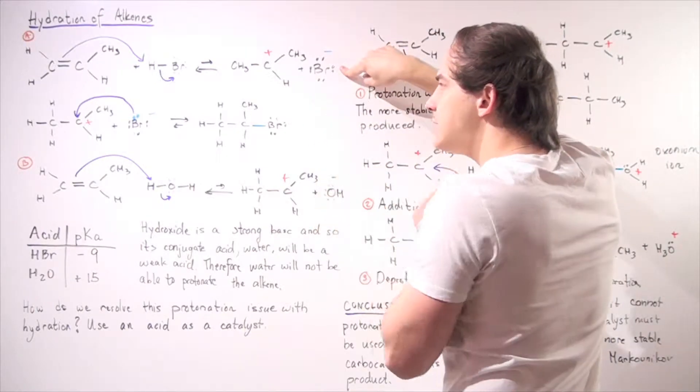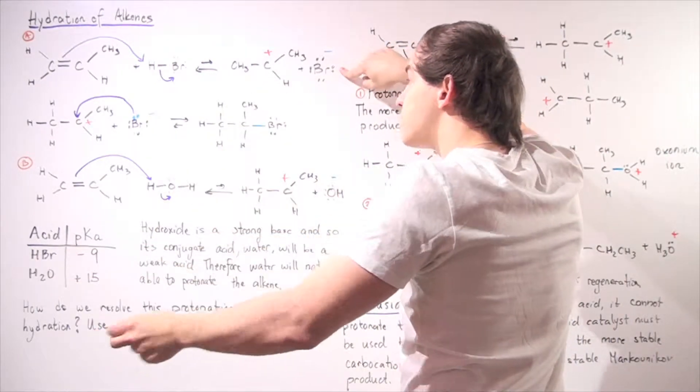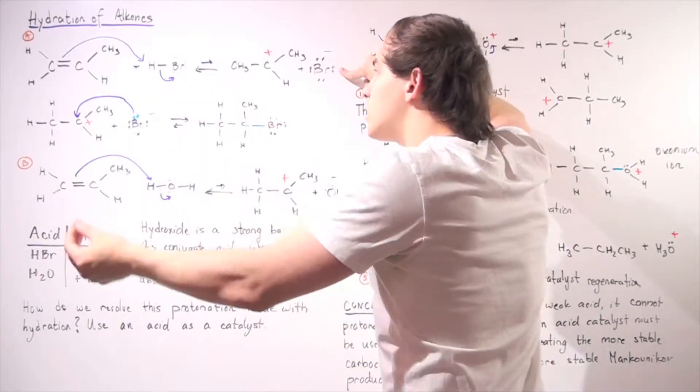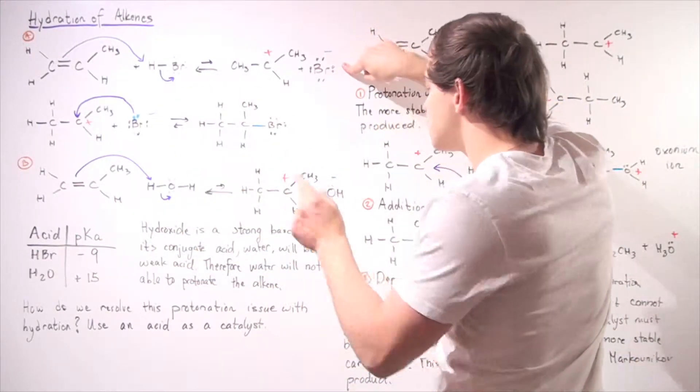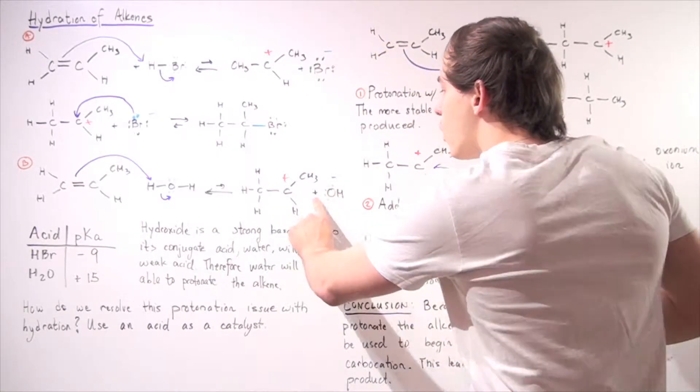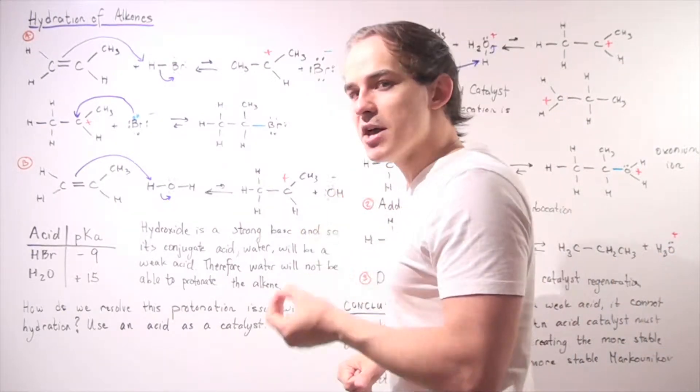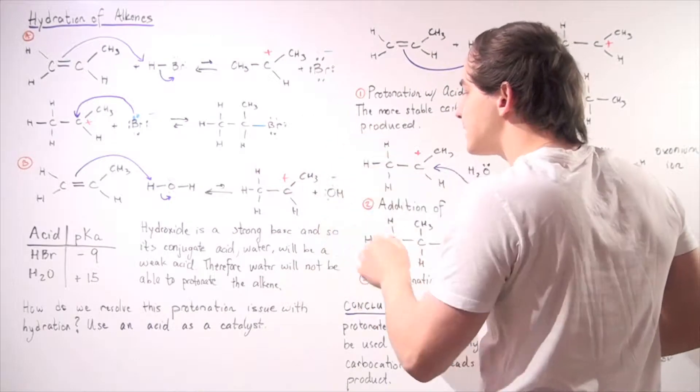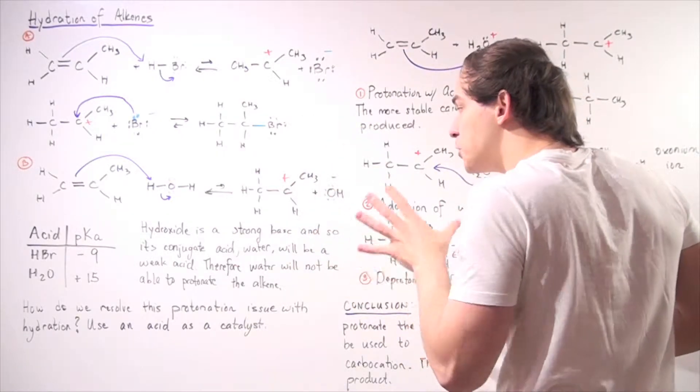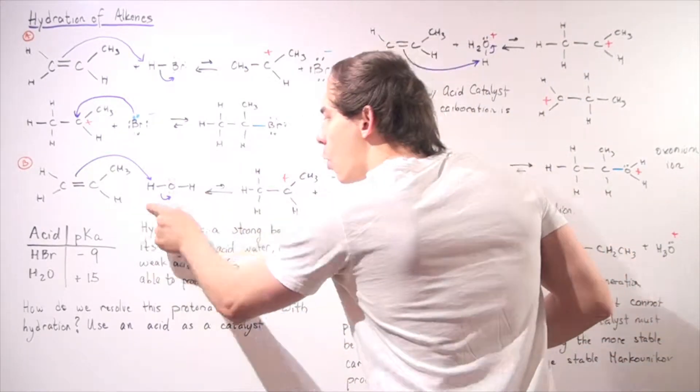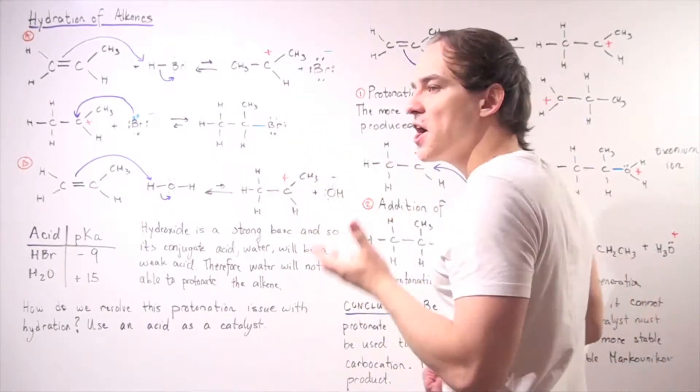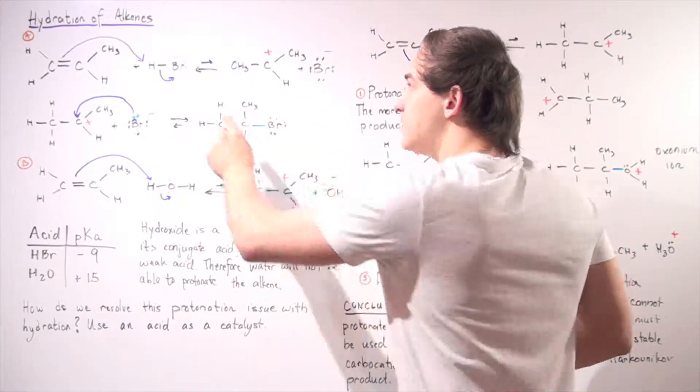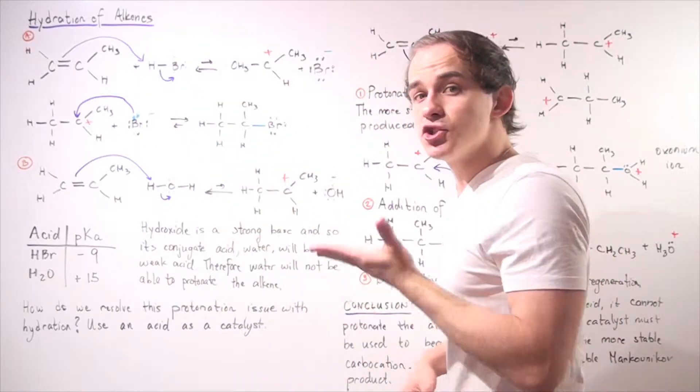So let's see which one of these bases is a better base. Remember, the stronger the base, the weaker its conjugate acid. The weaker the base, the stronger its conjugate acid. So let's look at our bromine and let's look at our hydroxide. So hydroxide is a much better base than bromine. In fact, hydroxide is a very good base and that means water is a very weak acid. Likewise, bromine is a very weak base and that means HBr is a very strong acid.